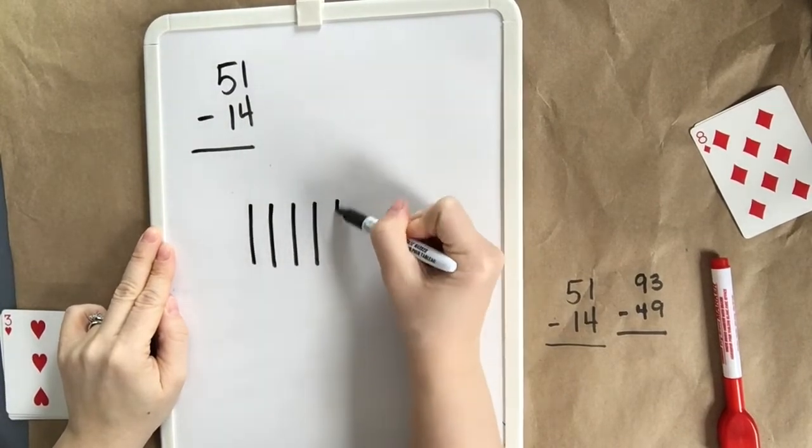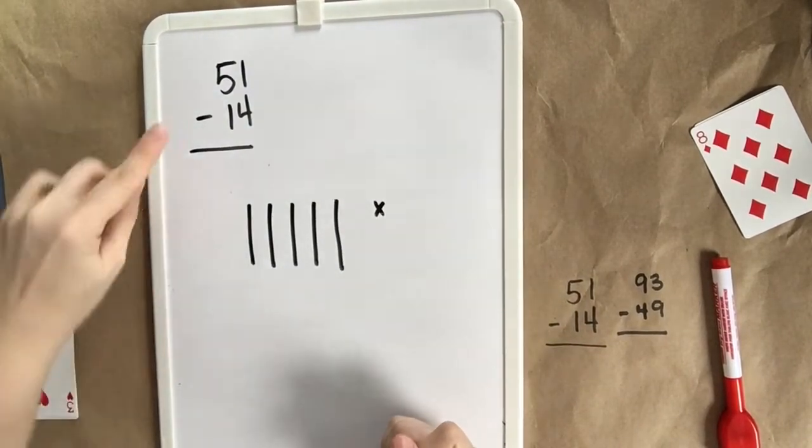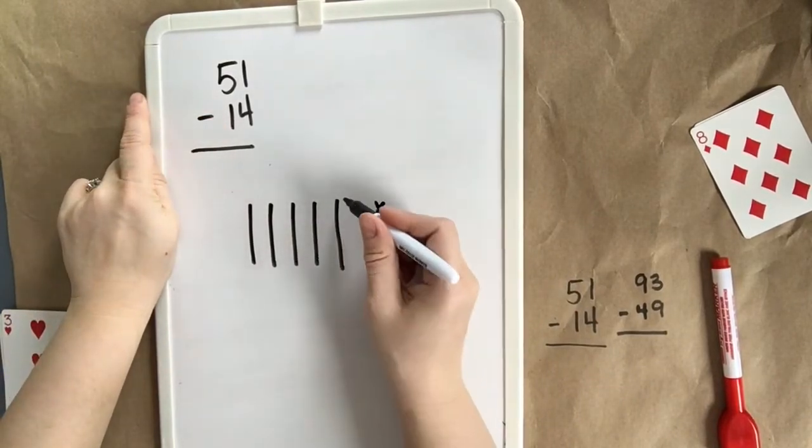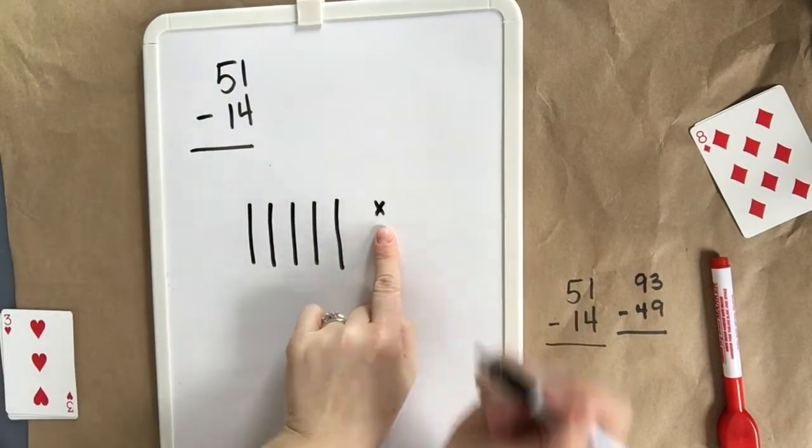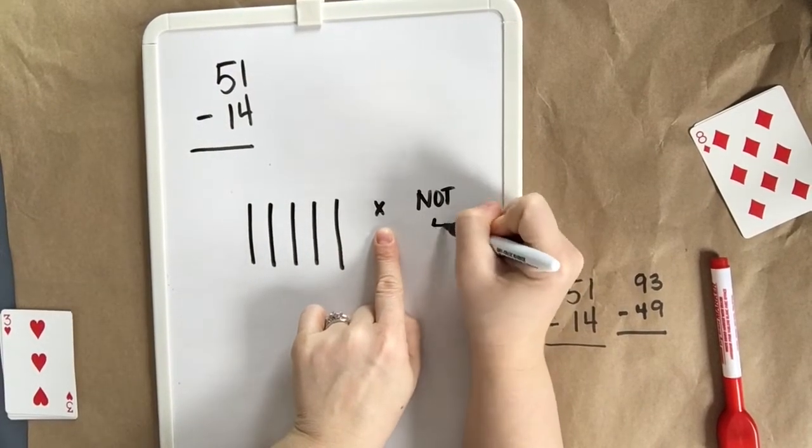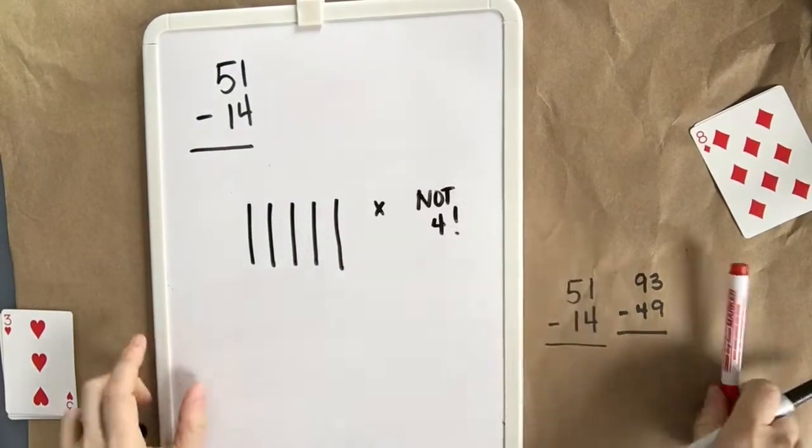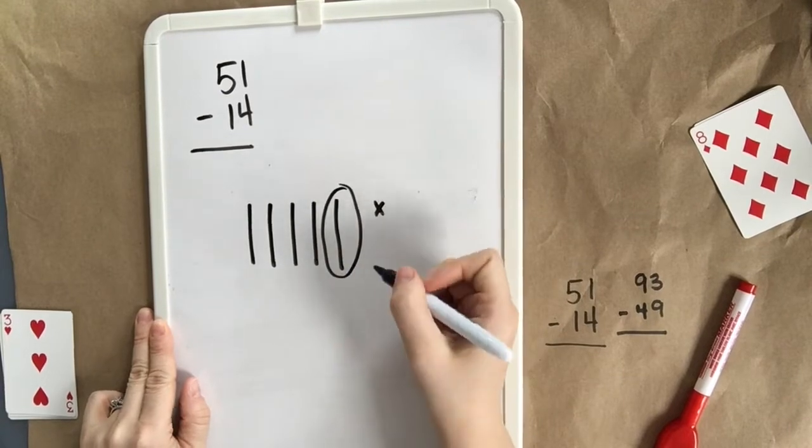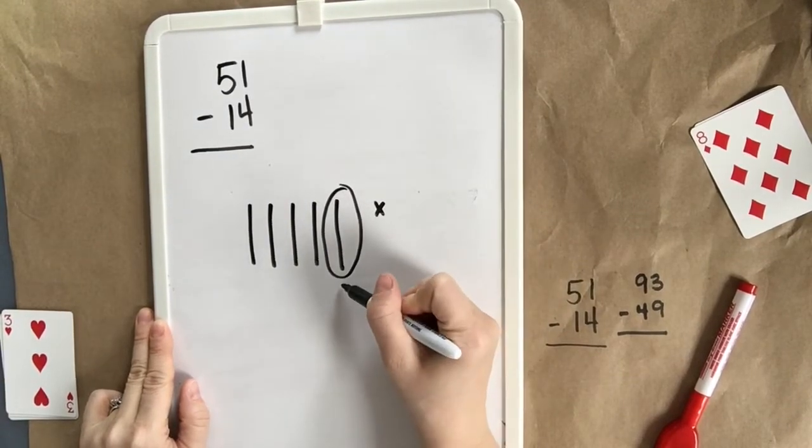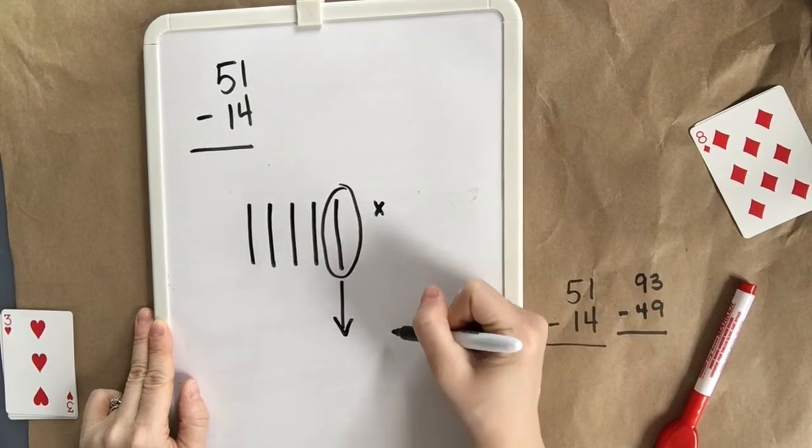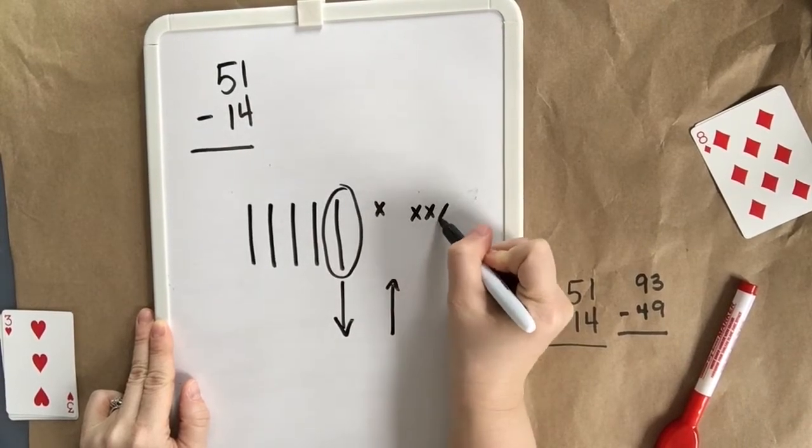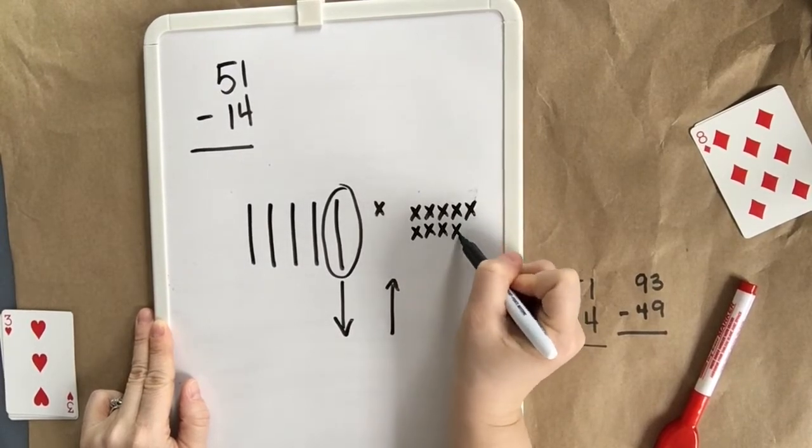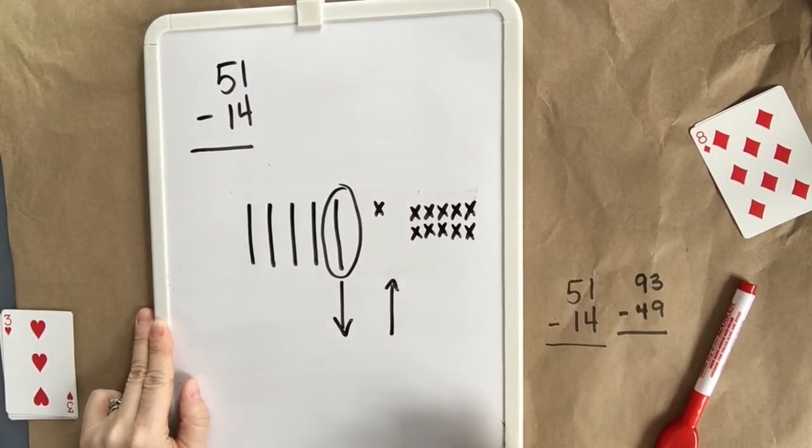I can also do this with base 10 rods and ones. That shows 51. Now I need to take 14 away. I can't take 4 away from 1 because there's not 4 there. I guess I'll have to borrow from my tens and regroup. So let's take 10 away and then we're going to add in 10 singles or 10 ones.